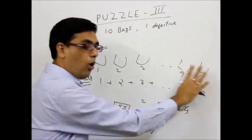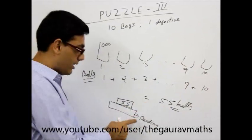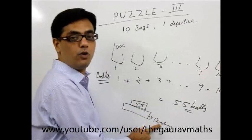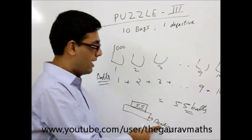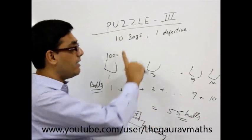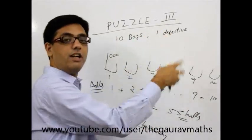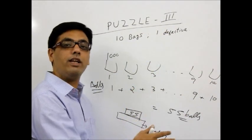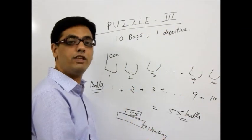Had all the balls been of 10 grams, then the reading which we would have got is 550 grams. Had all the balls been of 10 grams. But there is somewhere a defective bag which is contributing somewhat. And therefore, the reading which you will get would be definitely greater than 550 grams.